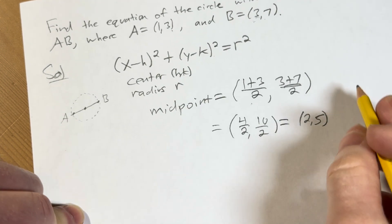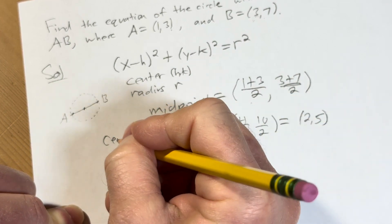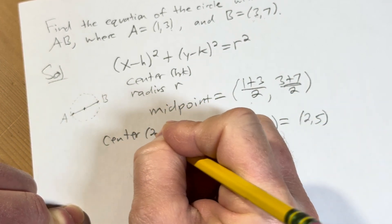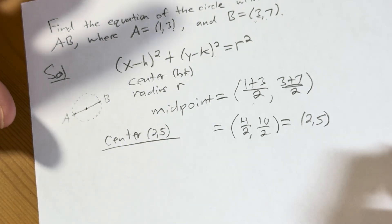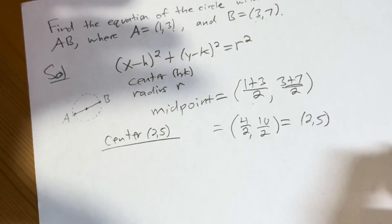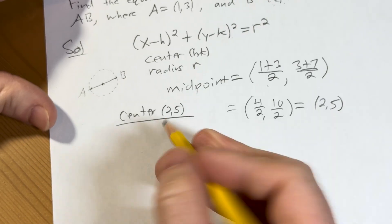Look at that, (2,5). Perfect, right? So that's going to be our center. So our center is going to be (2,5). So that's important. So now what we need is the radius. Well, the radius is going to be half of the diameter, right? So let's go ahead and do it that way. There's other ways to do it too.